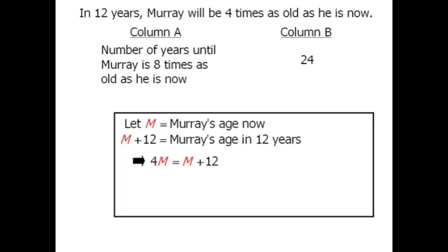At this point, we'll solve for M. First, we'll subtract M from both sides, and now we'll divide both sides by 3 to get M equals 4. So Murray's current age is 4 years old.